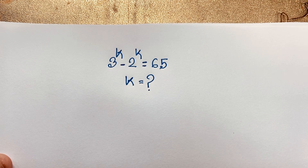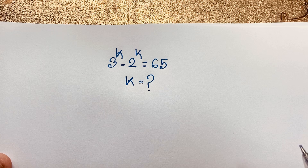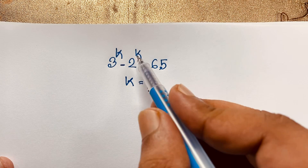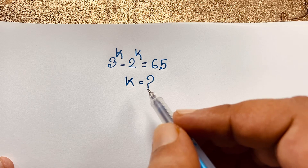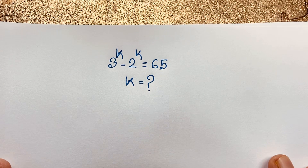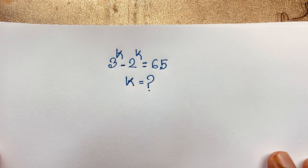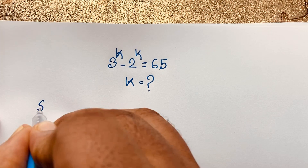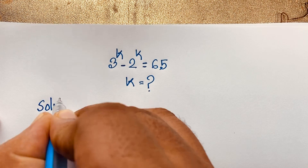Hello everyone, welcome to my YouTube channel. Today we are solving an interesting Math Olympiad question, which is 3 to the power k minus 2 to the power k is equal to 65. What is k? I will solve this interesting Math Olympiad question using our math solution method.